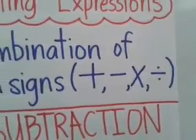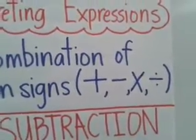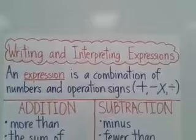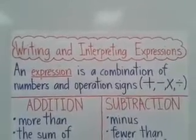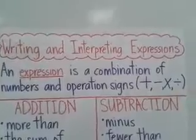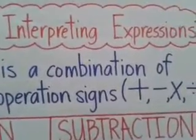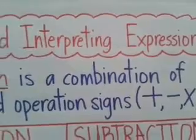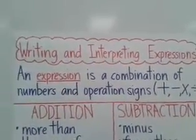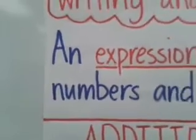So what operations do we have? There are four — what are they? We have adding, subtracting, multiplying, and dividing. Aside from the keyword 'expression,' what other key words might you see? Maybe 'combination' — that means combined, put together. What else do you see? The word 'numbers,' and also 'operation signs.'